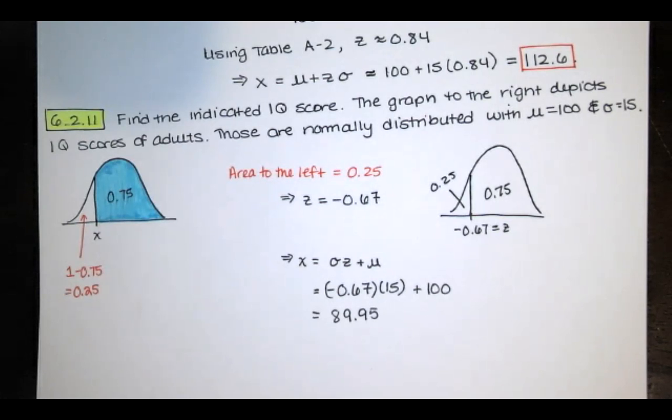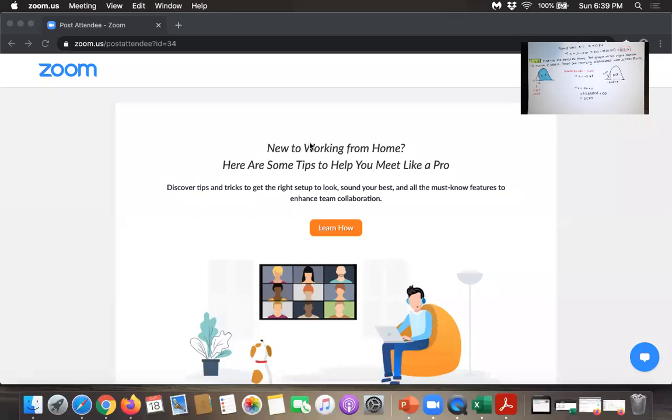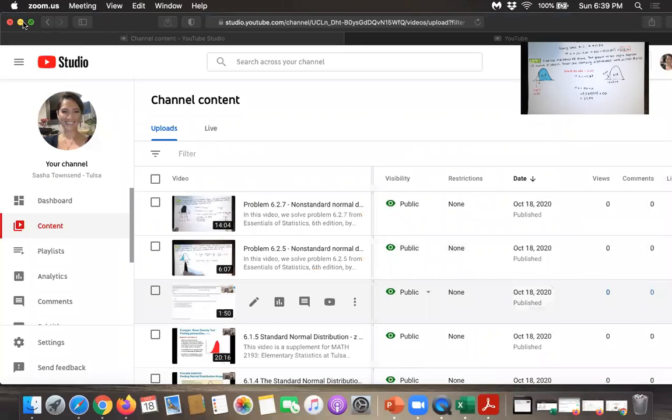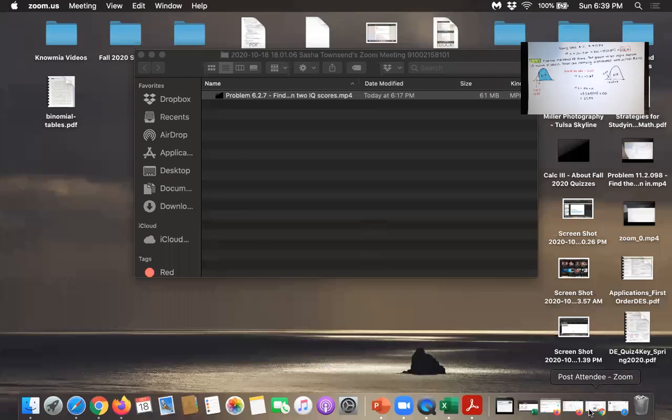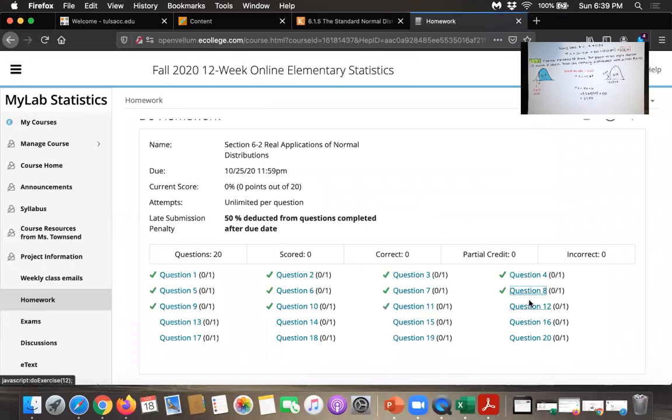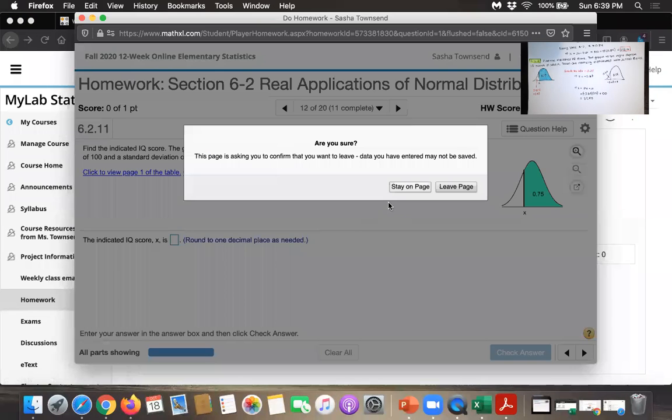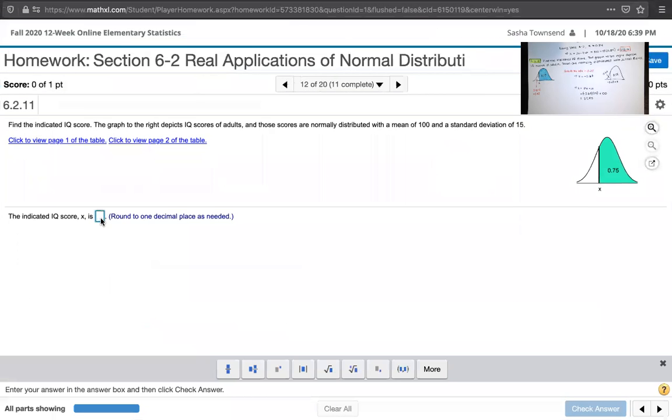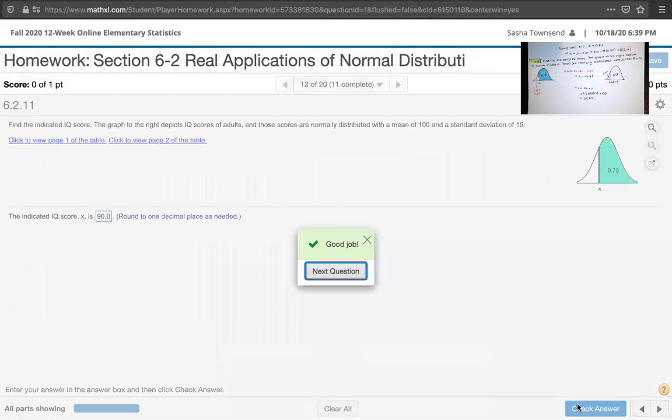Let's see if MyLab Statistics likes it. Here is that homework assignment. We'll go here and we're here. Okay. So I got 89.95 and I'm rounding to one decimal place, so that's 90.0. Check answer. All right.